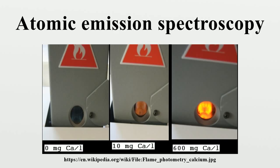The excited atoms subsequently emit light when they return to the ground electronic state. Each element emits light at a characteristic wavelength, which is dispersed by a grating or prism and detected in the spectrometer. A frequent application of emission measurement with the flame is the regulation of alkali metals for pharmaceutical analytics.